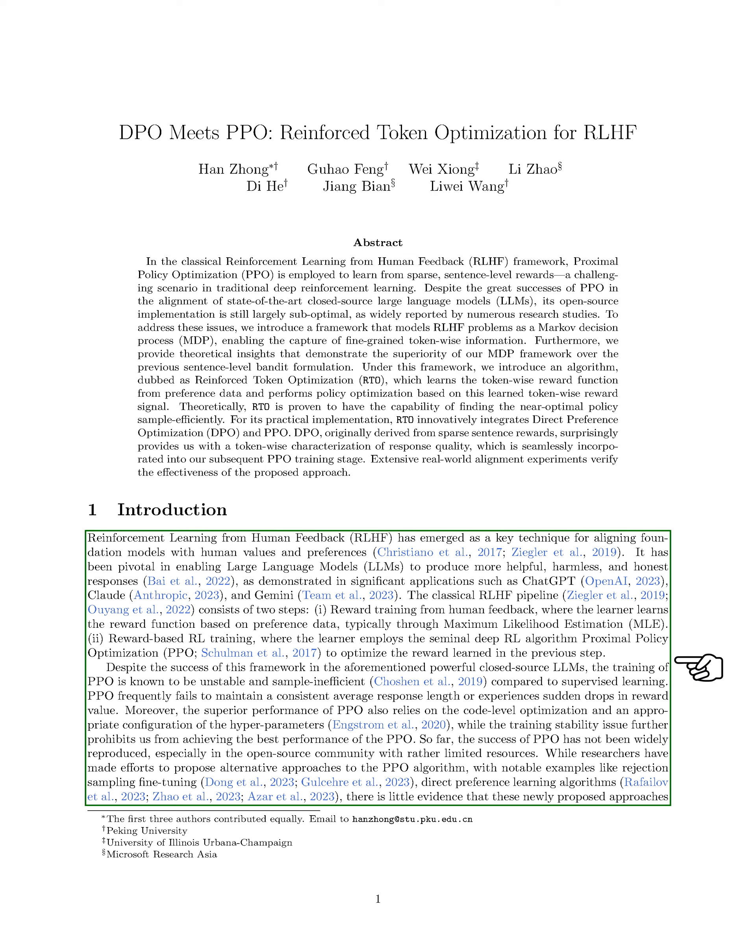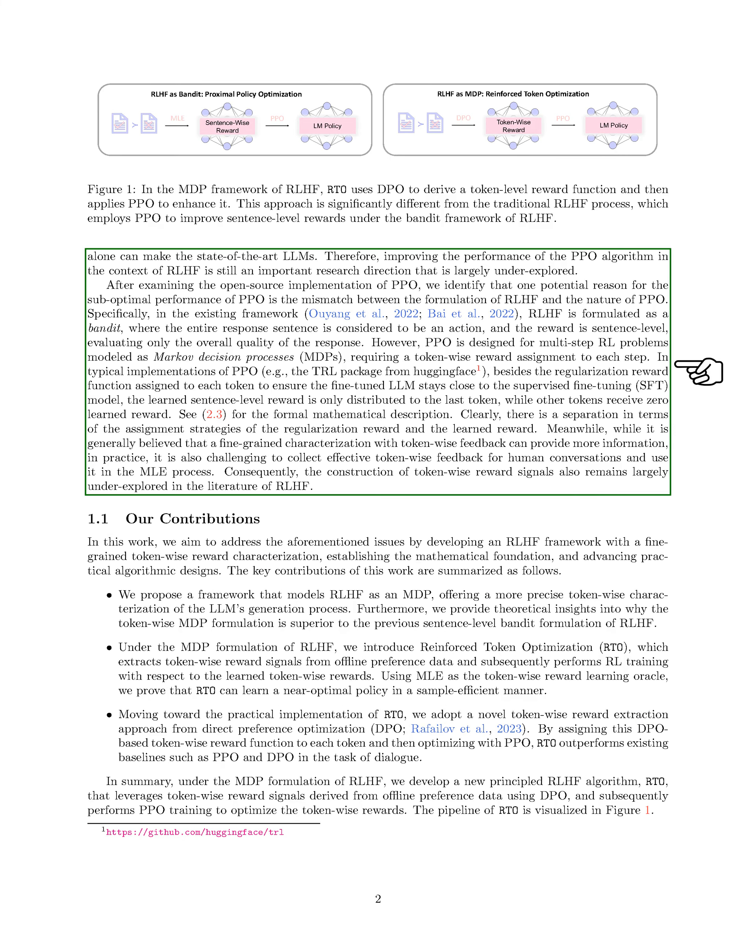Despite attempts to improve PPO or propose alternative methods, such as rejection sampling fine-tuning and direct preference learning algorithms, there is still a need to enhance PPO's performance in RLHF applications. One reason for PPO's suboptimal performance could be the mismatch between how RLHF is formulated as a bandit problem, treating entire responses as actions with sentence-level rewards, and PPO's design for multi-step problems with token-wise rewards.